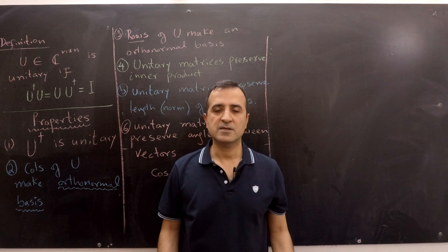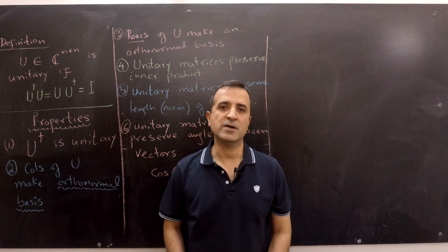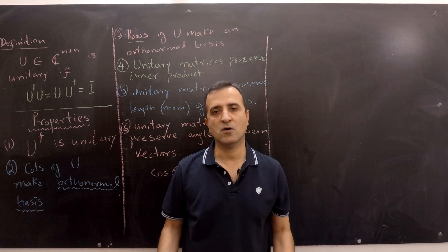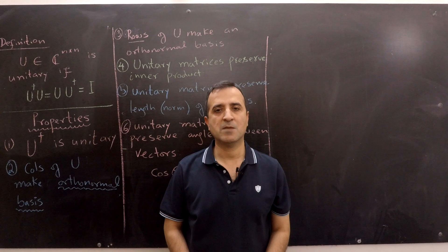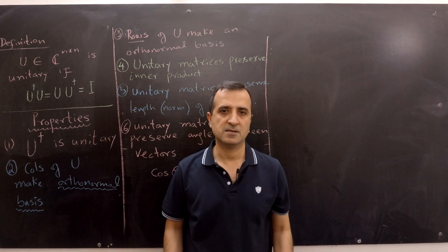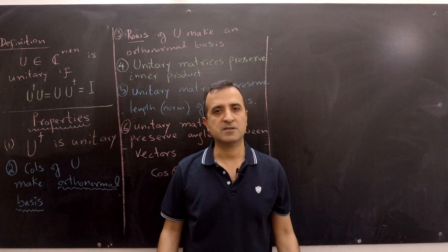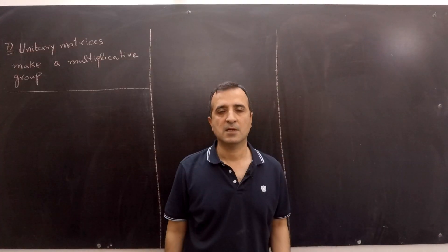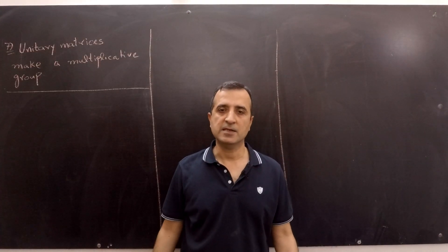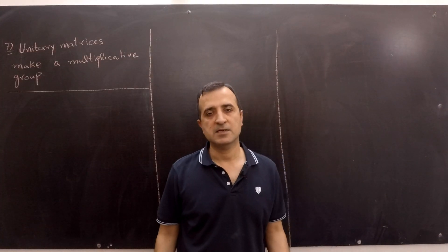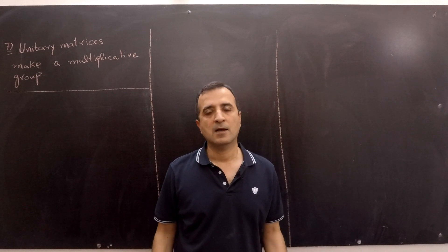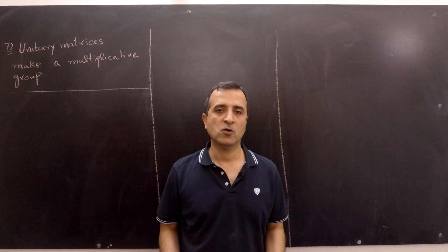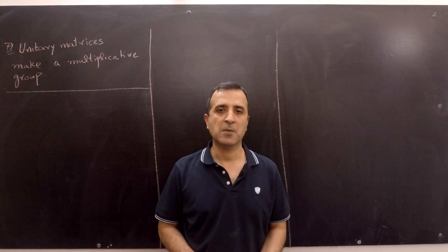In the last video, I discussed 6 different properties of unitary matrices and provided proofs of those properties. In this video, I will start with property number 7 of unitary matrices. Property 7 states that unitary matrices make a multiplicative group. Let's revise what a multiplicative group is, and then see how unitary matrices make a multiplicative group.